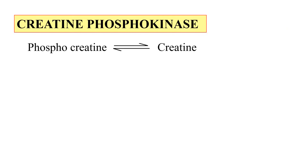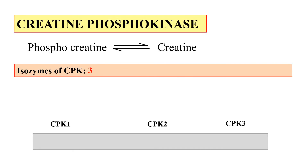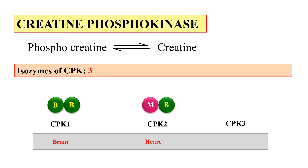The next enzyme is creatine phosphokinase, which catalyzes the reaction of phosphocreatine to creatine. Creatine phosphokinase has 3 isoenzymes: CPK1, CPK2, and CPK3. CPK1 consists of 2 B monomers (BB) and is present in the brain. CPK2 consists of 1 B and 1 M monomer and is present in the heart. CPK3 has both M monomers (M2) and is present in skeletal muscle.